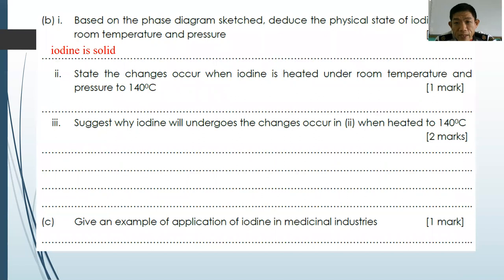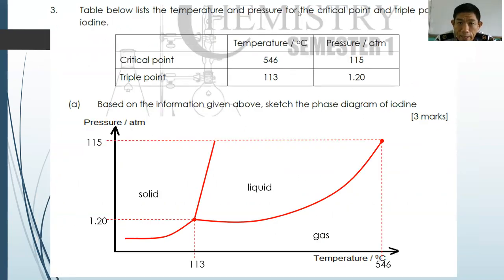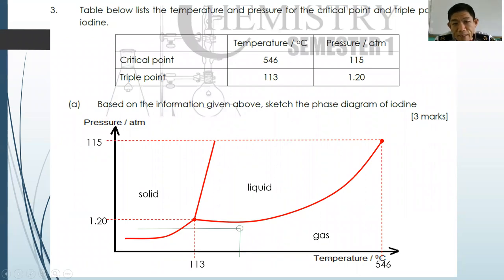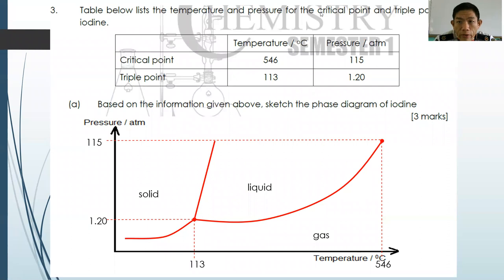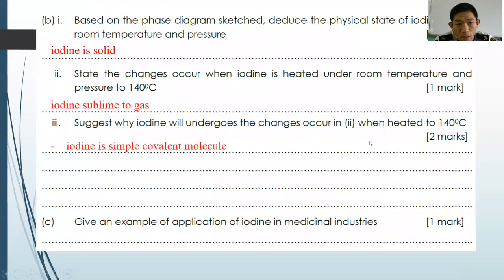State the changes that occur when iodine is heated under atmospheric pressure to 140°C. Starting from the iodine point at one atmosphere and 25°C — which is in the solid region — when heated to 140°C (which is greater than 130°C, the triple point temperature), it moves into the gaseous region. So you can deduce that iodine becomes a gas under these conditions.